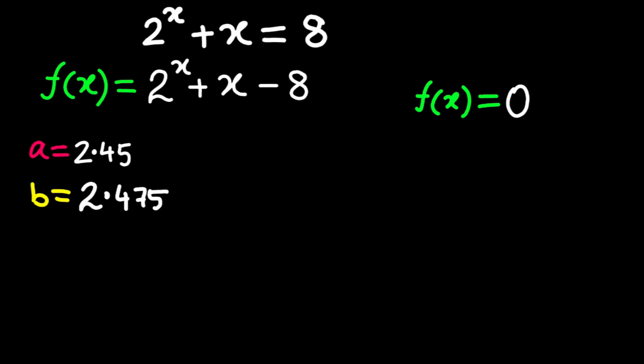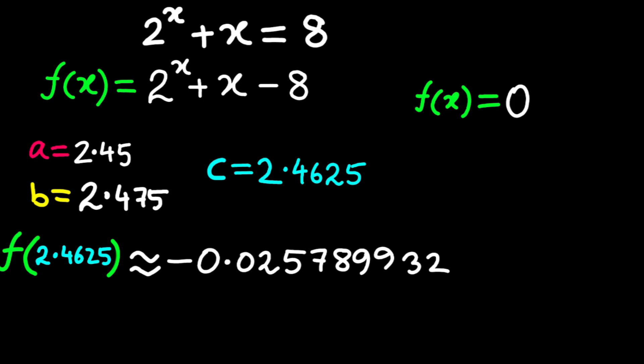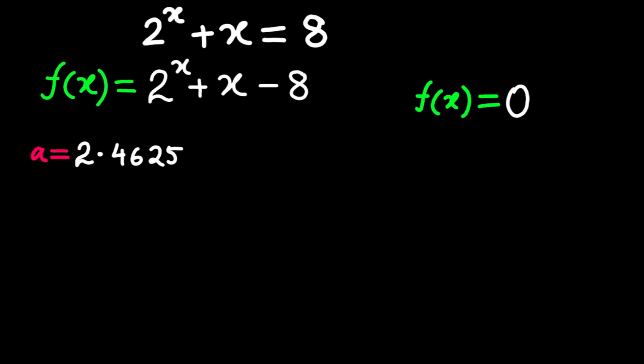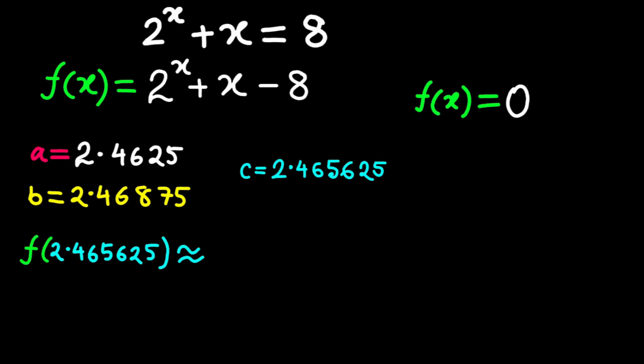Let's keep going. Midpoint, 2.4625. F of 2.4625 is approximately negative 0.025789932. New interval, 2.4625 to 2.46875. Midpoint, 2.46875. F of 2.46875 is approximately 0.0043895275. Interval, 2.4625 to 2.46875. Midpoint, 2.465625. F of 2.465625 is approximately negative 0.010173160. Keep this up. And after 12 steps, we get to an interval,